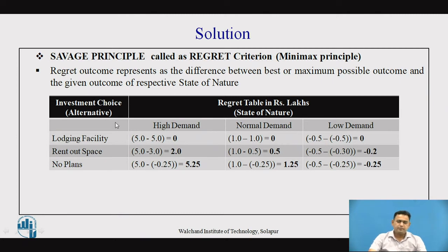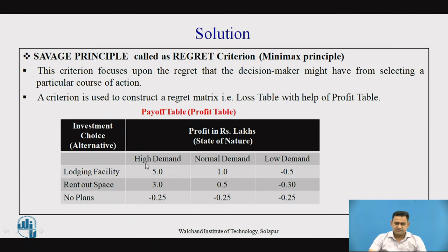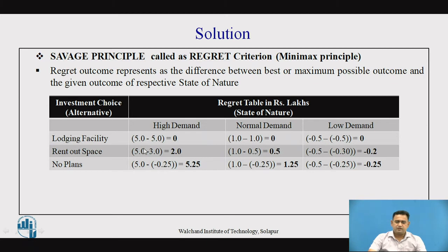The regret table is obtained by the following method: select the maximum or best value from each state of nature column. The three states of nature are high demand, normal demand, and low demand. The maximum outcome for high demand is 5; for normal demand it is 1; and for low demand it is minus 0.25. Then find the difference between each alternative's outcome and the best outcome for that state of nature. So for high demand: 5 minus 5 is 0, 5 minus 3 is 2, and 5 minus (−0.25) is 5.25.